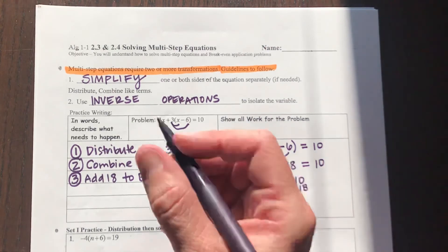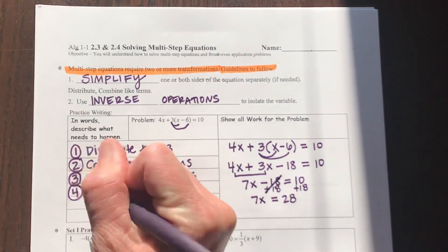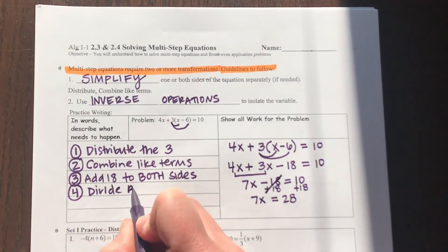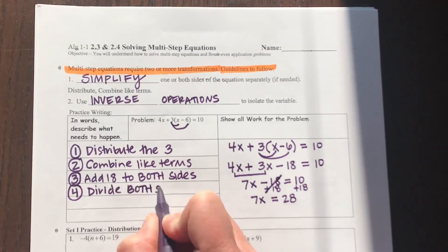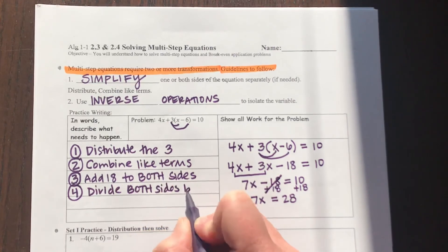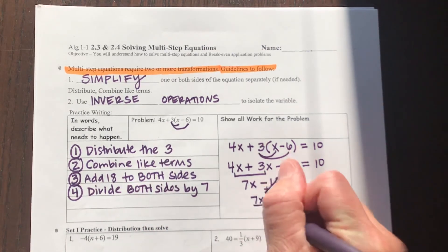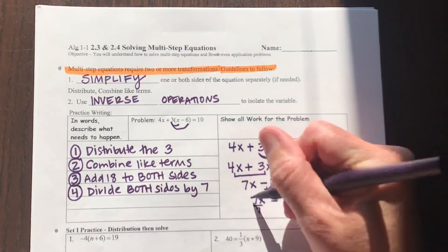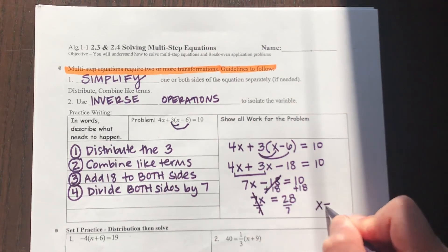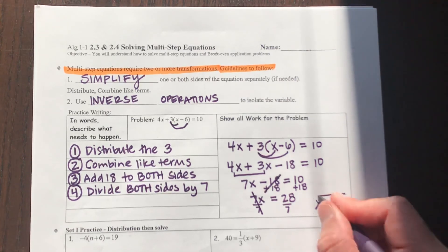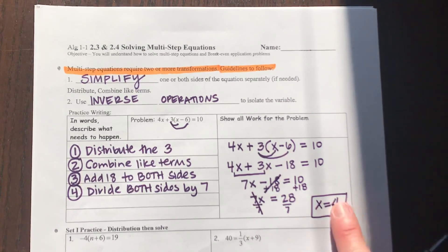My fourth step will be to divide both sides by 7. If I divide both sides by 7, I will now have x is equal to 28 divided by 7. So my solution is 4.